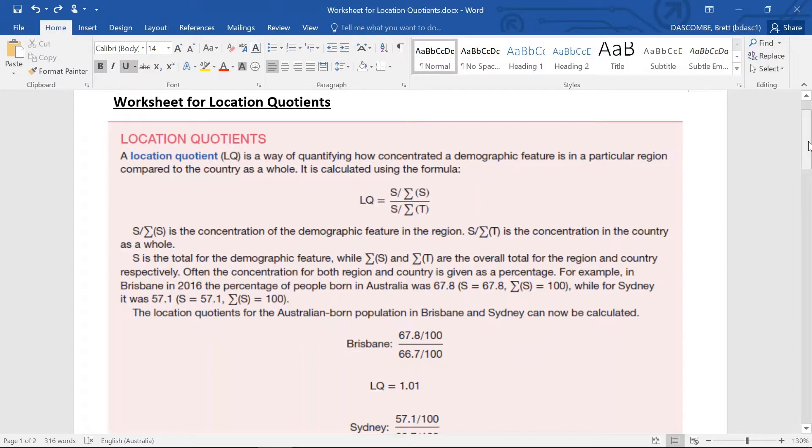So a location quotient is a way of quantifying how concentrated a demographic feature is in a particular region compared to the country as a whole. It's calculated using a formula.